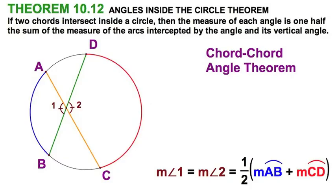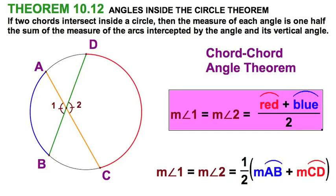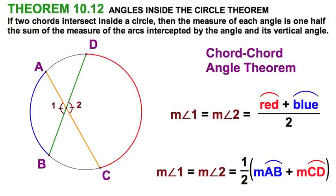Now, I prefer to teach my students something a little catchier. That's why we use our color scheme here. We've got red plus blue divided by 2. I'm going to make a song out of that. Red plus blue divided by 2. That's the measure of each of these chord-chord angles.